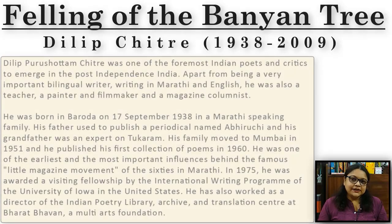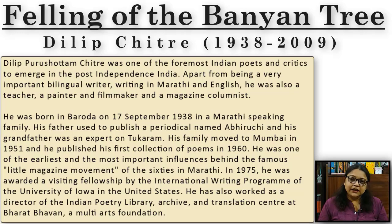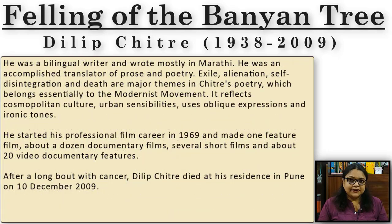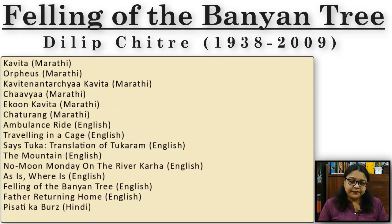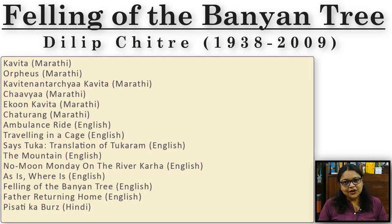Dilip Chitre was a teacher, painter, filmmaker, and a columnist. He lived and taught mostly in Ethiopia and the USA. He was a bilingual writer, which means he wrote in two languages: Marathi and English. He translated a lot of Marathi poems, and you can see a list of his works alongside, along with his short biographical note.